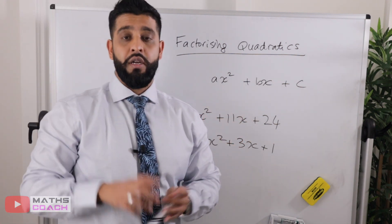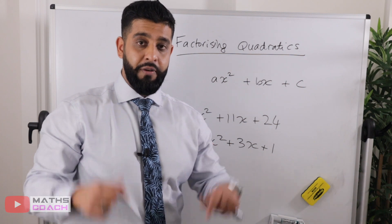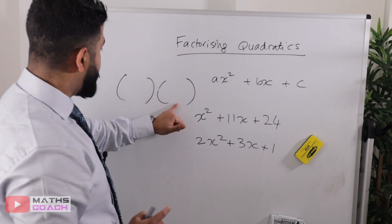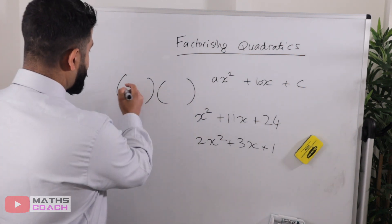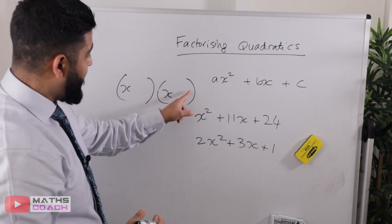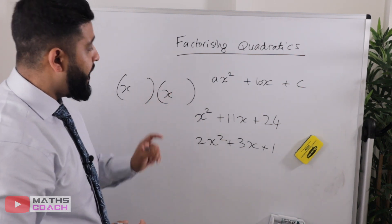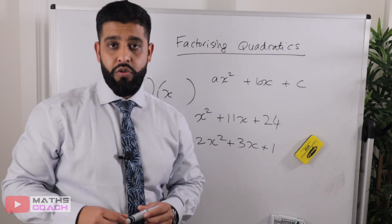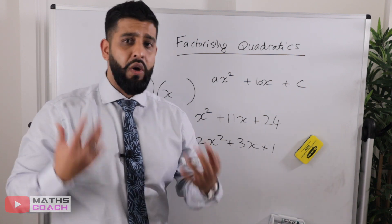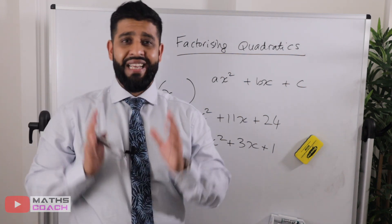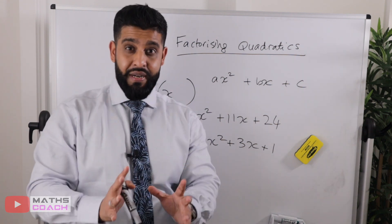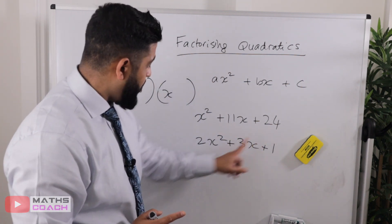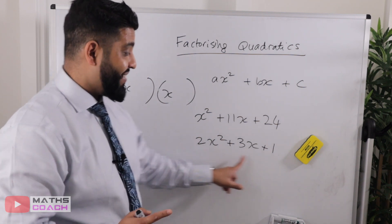When you have this format, you have to use double brackets multiplying with each other. There is a method where you just put down two empty brackets and start filling things in, but the method I want to use in this lesson is called the AC method. The AC method is very robust and very systematic — it's going to work for you all the time in an exam, whether the quadratic is simple or complex.